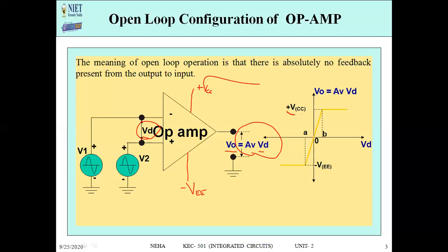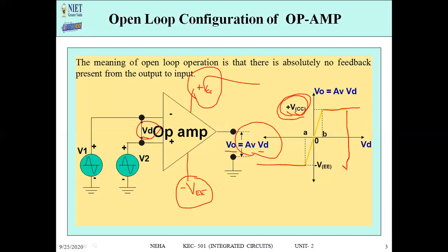The maximum output cannot exceed plus VCC because our maximum supply voltage is plus VCC, and the minimum supply voltage is minus VE. Therefore, no output value will go beyond plus VCC, and the minimum will come from minus VE. That is why the transfer curve is saturated at both points — the output voltage is limited between plus VCC and minus VE.